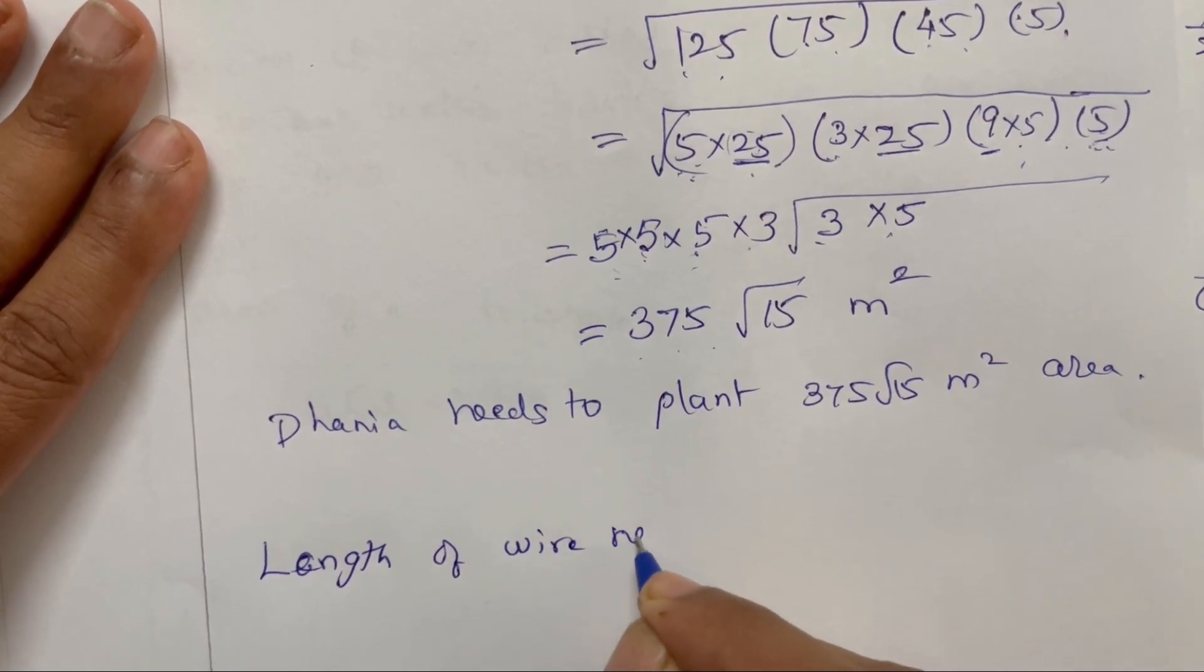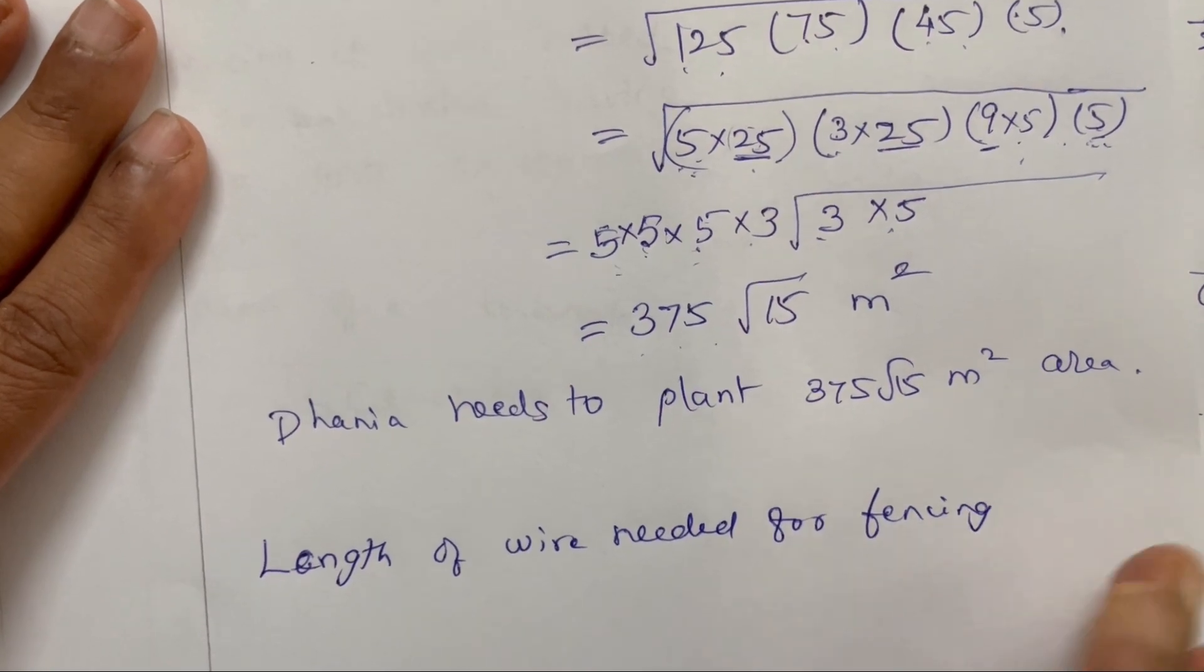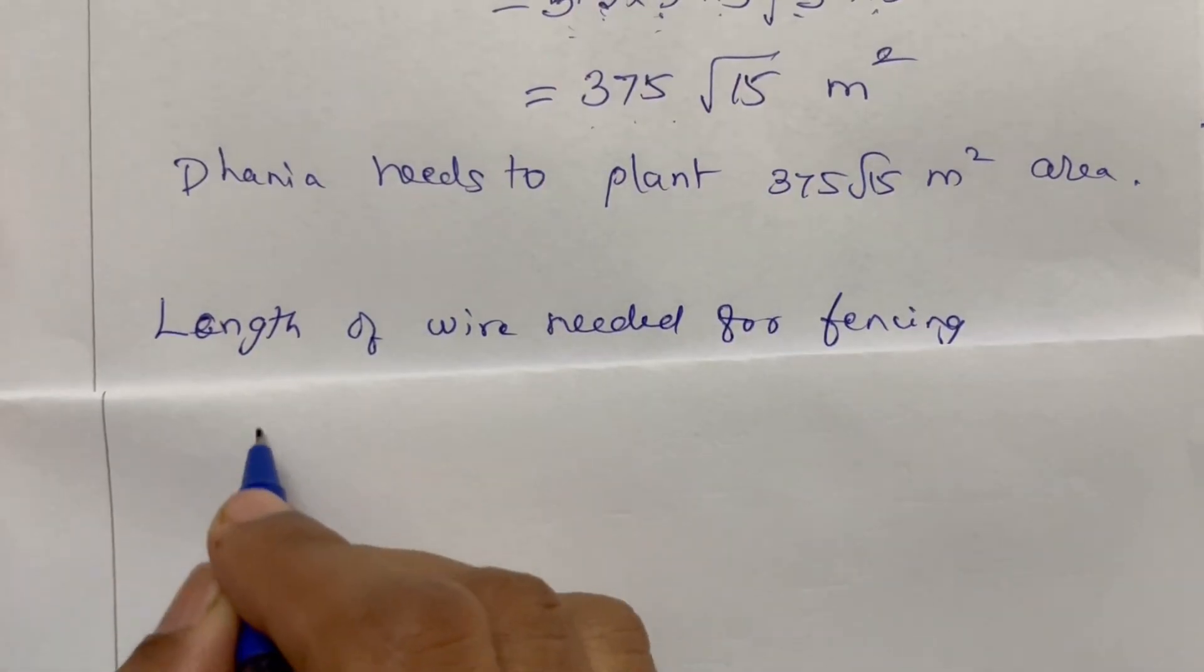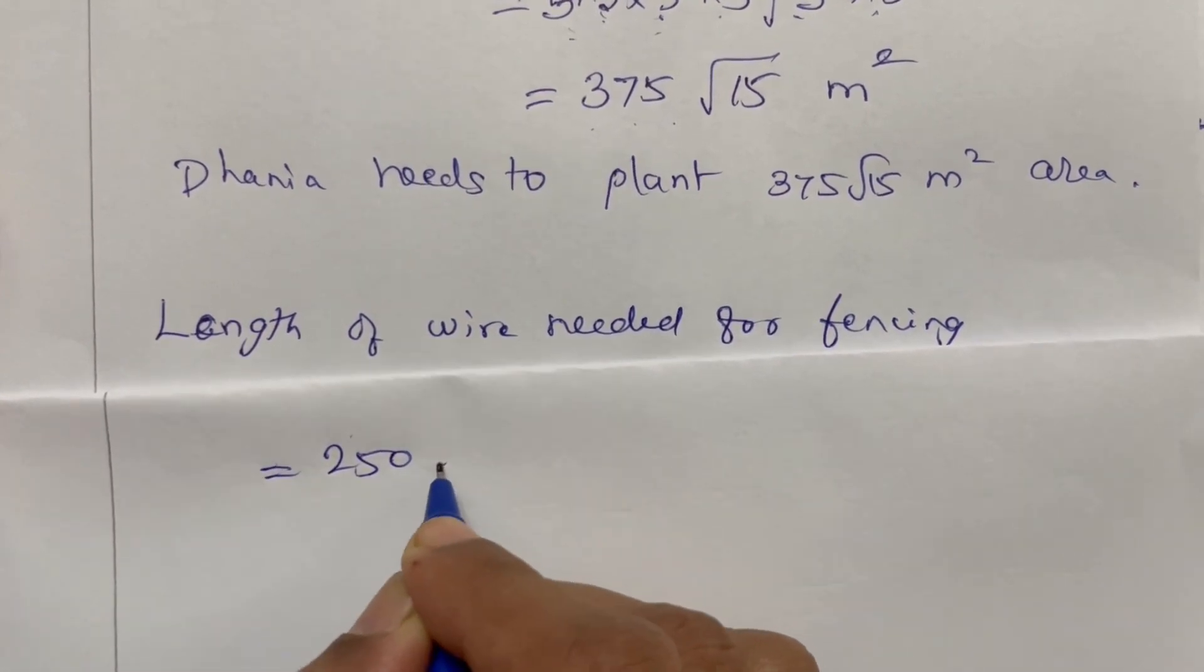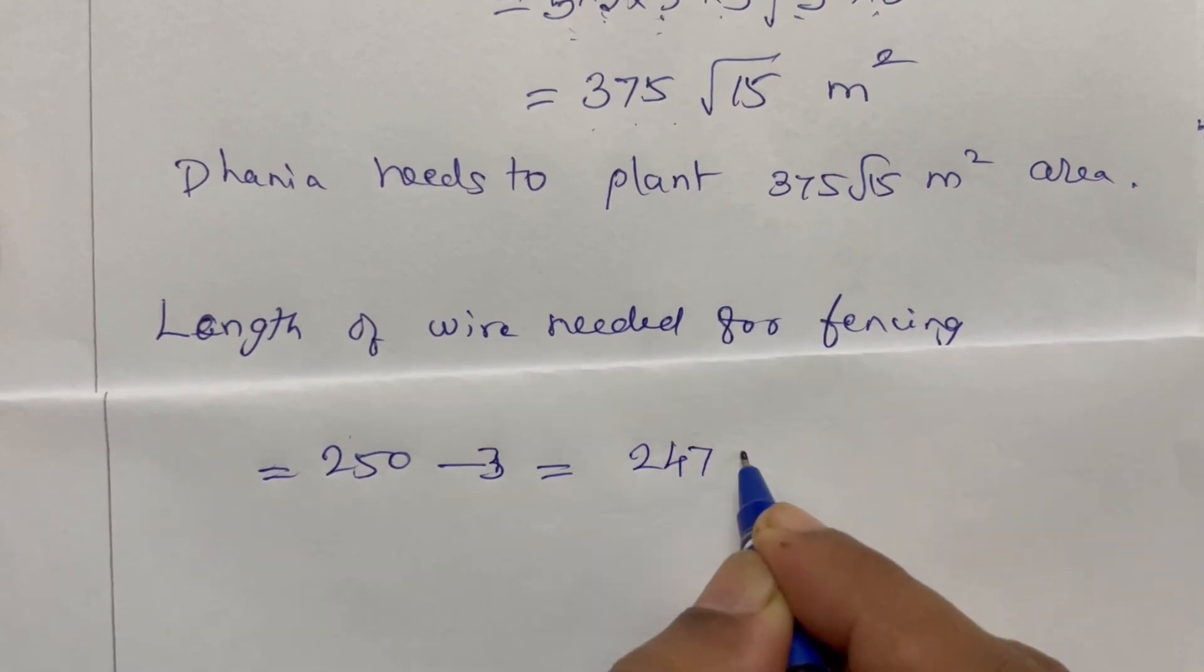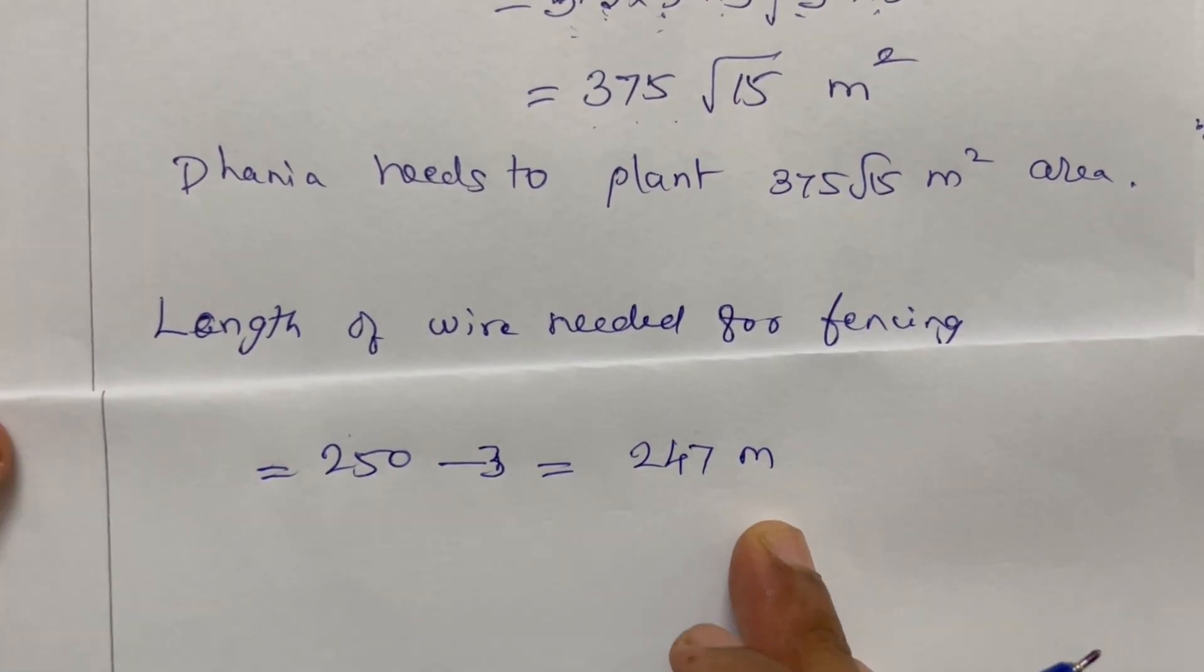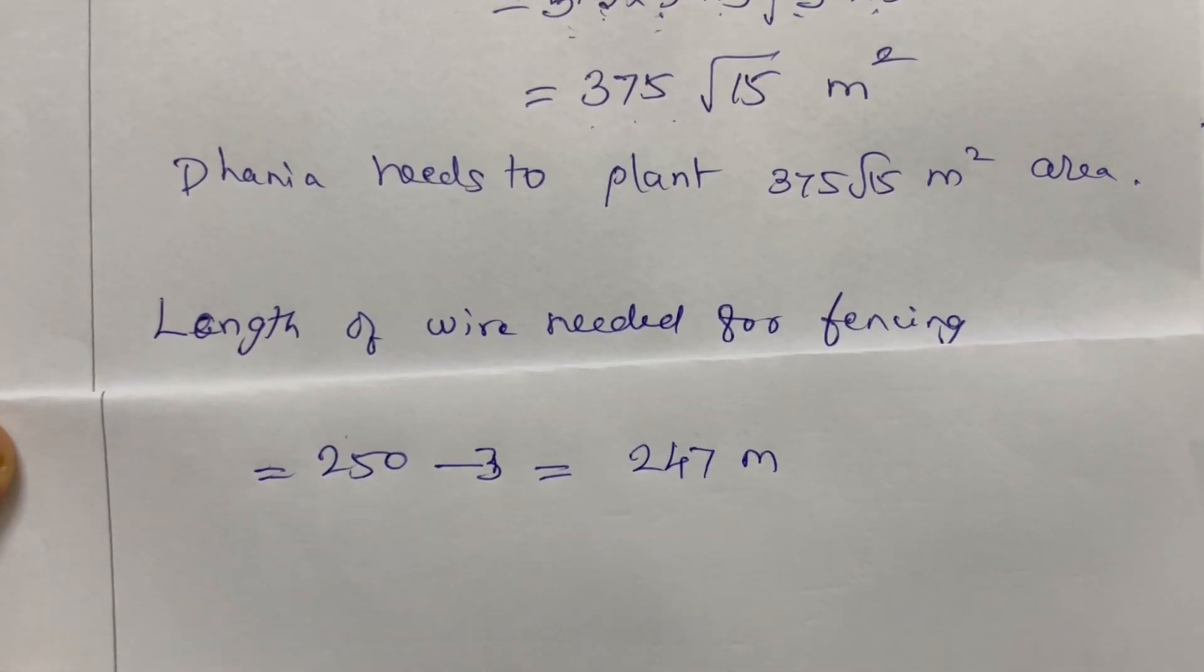Length of wire needed for fencing: 250 meter minus 3 meter gate equals 247 meter.